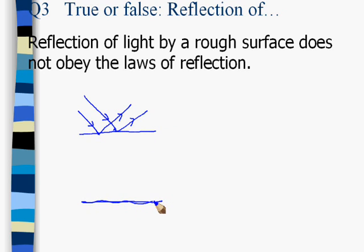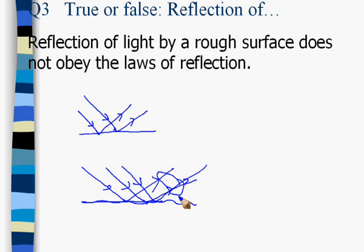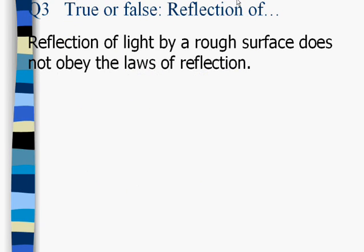But in diffused reflection, the curvature of the surface gives us the uneven spreading of light rays, and the light ray doesn't remain parallel to all the rays in the beam. Whether the reflection is regular or irregular, the laws of reflection always remain valid. The laws of reflection are never violated.